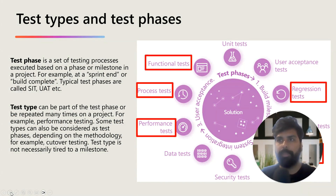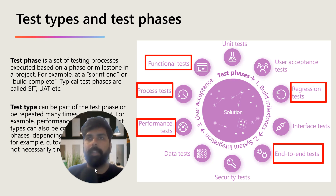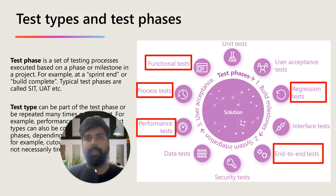This is the slide we used in the last video, where we talked about the different test types and phases. These different test types are performed by different people in the project, but I have highlighted where, as a functional consultant, you are responsible to perform and execute. The key test types you are responsible for are: functional test, process test, performance test, end-to-end test, and regression test.